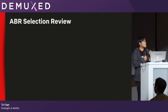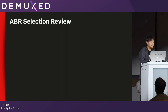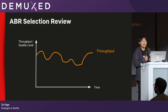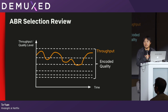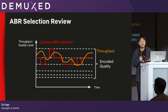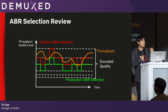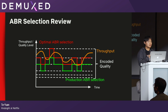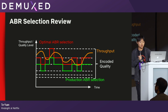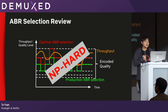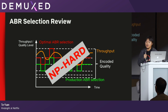Ideally, if we can review every single session of each individual ABR decision after the fact, then we can use the observed throughput plus the encoding quality that we provided, and calculate the optimal ABR decisions. We can use that to compare against what we do in production and see the discrepancy. The problem, though, is that this optimal selection is actually an NP-hard problem.